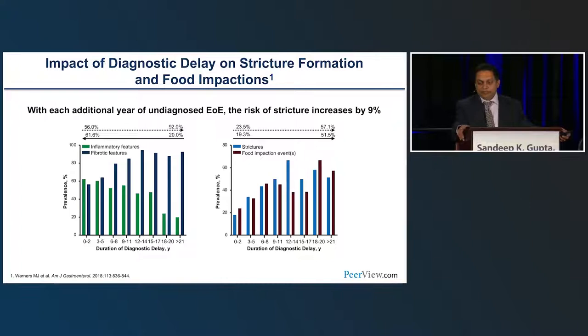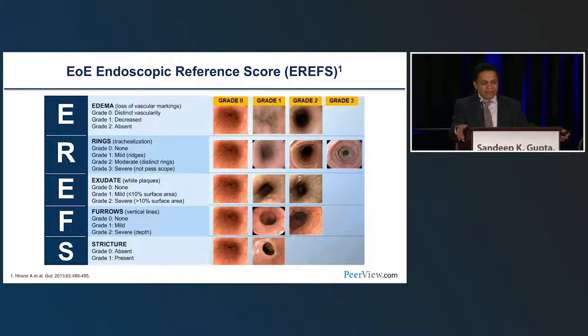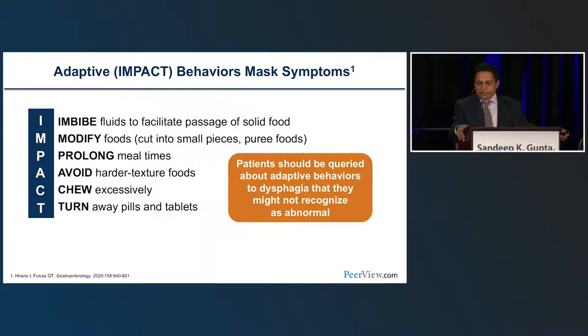A key graphic illustrates that inflammatory changes decrease over time with diagnostic delay while fibrotic features increase — which mirrors the increase in food impactions and strictures over time. The EREFS scoring system for eosinophilic esophagitis consists of edema, rings, exudates, furrows, and strictures — a useful tool for tracking endoscopic disease activity.